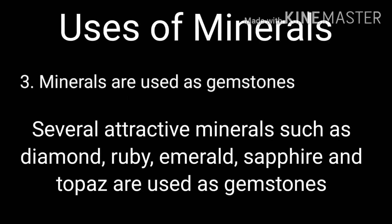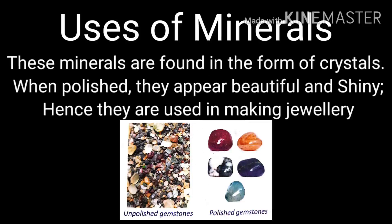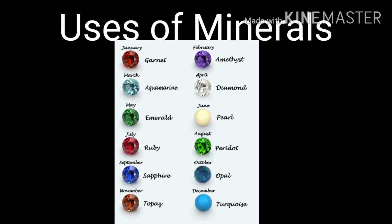Minerals are also used as gemstones. Several attractive minerals such as diamond, ruby, emerald, sapphire and topaz are used as gemstones. These minerals are found in the form of crystals. When they are polished, they appear beautiful and shiny, and hence they are used in making jewelry.